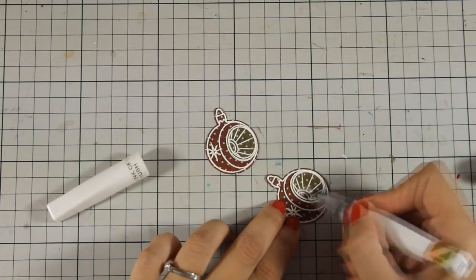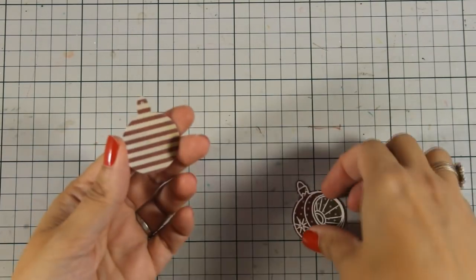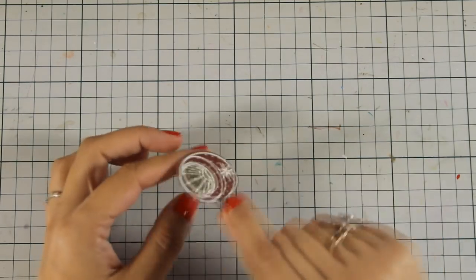I am also adding some glitter with my clear Wink of Stella glitter pen because ornaments just have to be shiny and you can see that I can stick them back to back and they match perfectly.